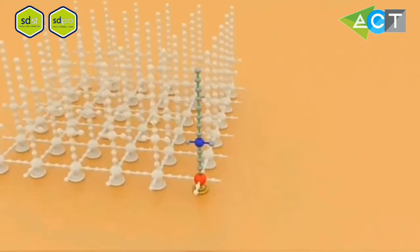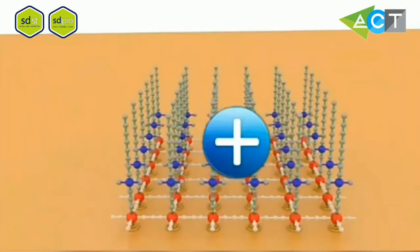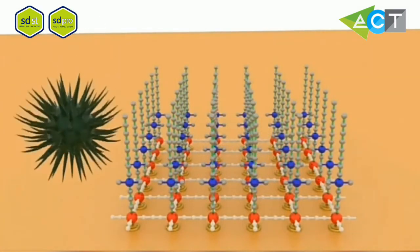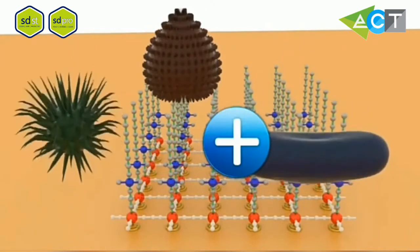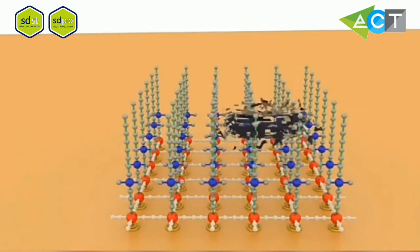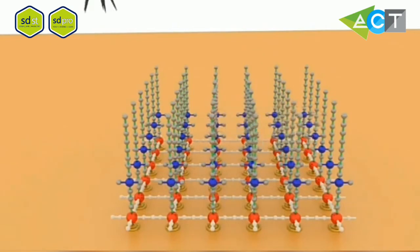This invisible coating creates a positively charged matrix that attracts microbes and punctures their cell membranes on contact. Odor-causing bacteria, viruses, and mold must have a receptive surface to survive. A surface with an antimicrobial coating is completely inhospitable to microbes.